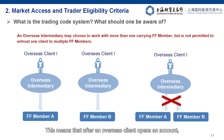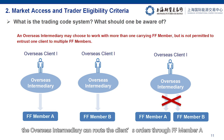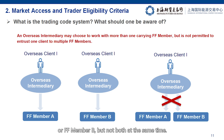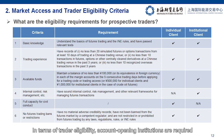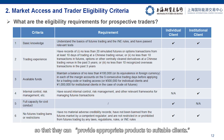Here is another rule. An overseas intermediary can engage multiple FF members, but cannot carry the same client through more than one FF member. This means that after an overseas client opens an account, the overseas intermediary can route the client's orders through FF member A or FF member B, but not both at the same time. In terms of trader eligibility, account opening institutions are required to assess a client on his futures trading knowledge and risk tolerance, so that they can provide appropriate products to suitable clients.